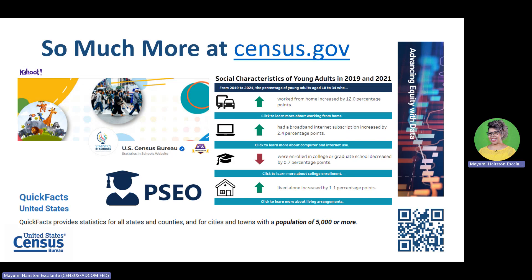We have more data and interactive tools for you. Visit census.gov and search for these topics by keyword, or scan the QR code for direct links to play Kahoot games, pull quick facts about your state, county, city, or town, view annual earnings and job industries by degree type in the Post-Secondary Employment Outcomes (PSEO) Explorer, and see how social characteristics of young adults aged 18 to 34 changed from 2019 to 2021. Access Census Bureau data to advance equity — data is power, and it's in your hands.